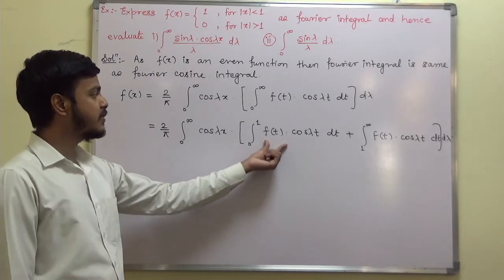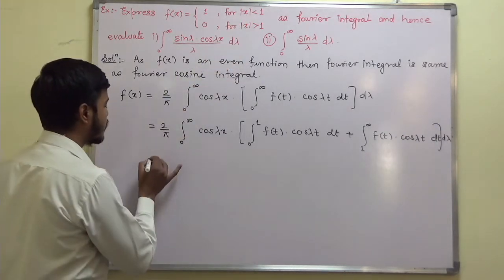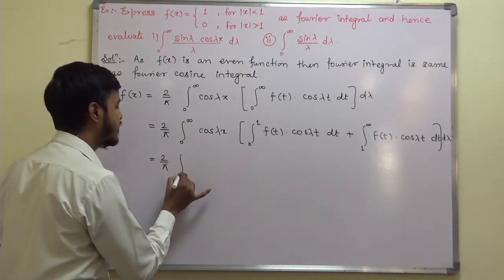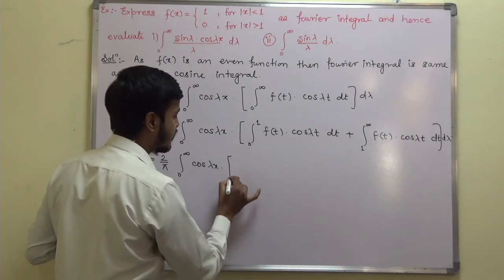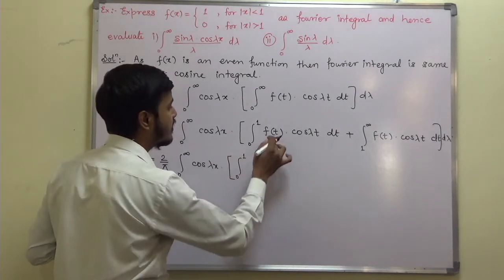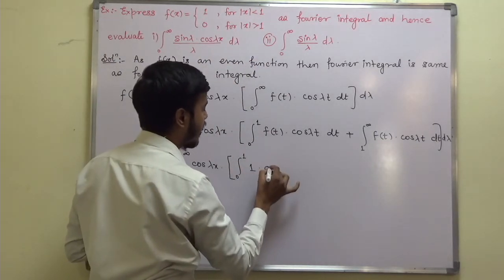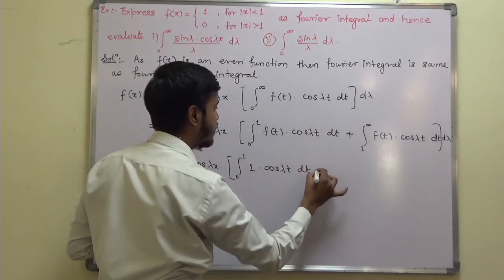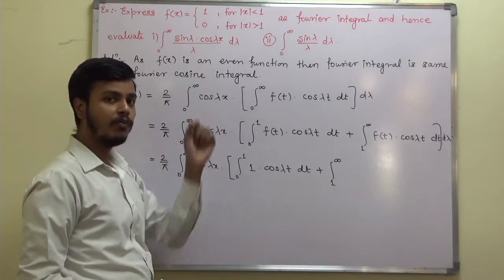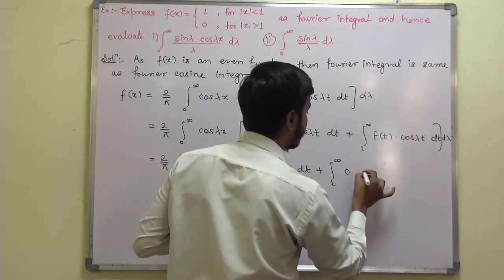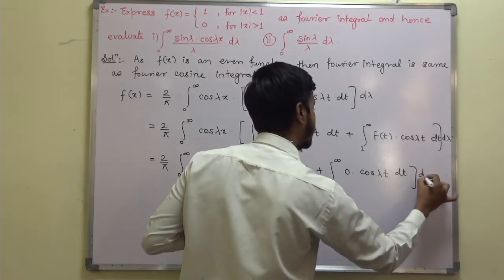Now just substitute the values. For 0 to 1, this comes under mod of x less than 1, so: 2 by π, integration 0 to infinity, cos(λx), and the functional value f(t) is 1, so we get 1 times cos(λt) dt. Plus for 1 to infinity — values greater than 1 — we have f(t) equal to 0, so 0 times cos(λt) dt, times dλ.